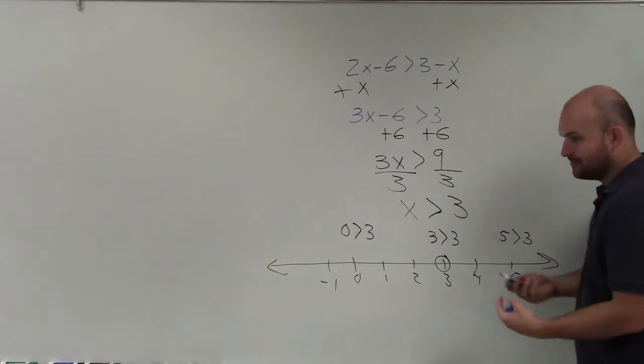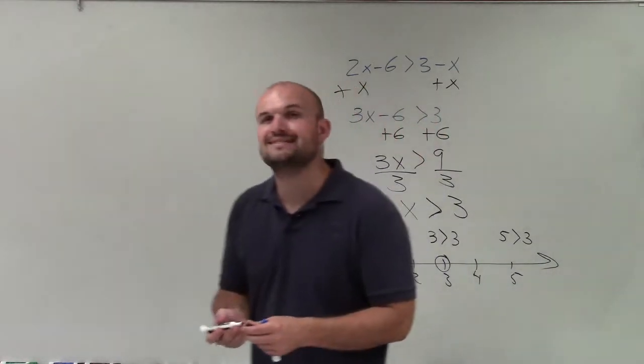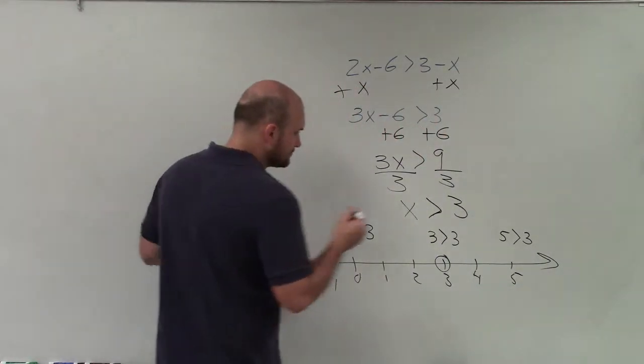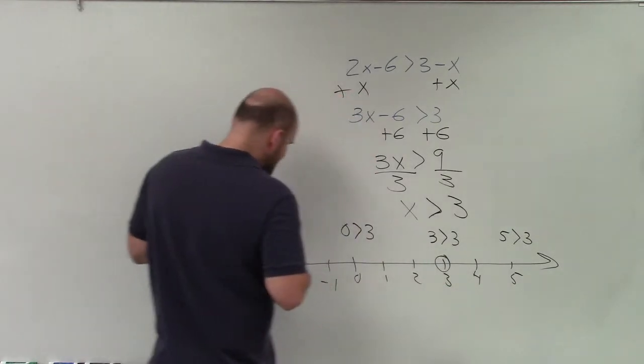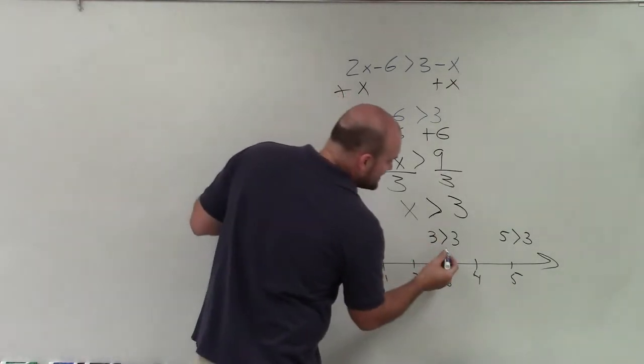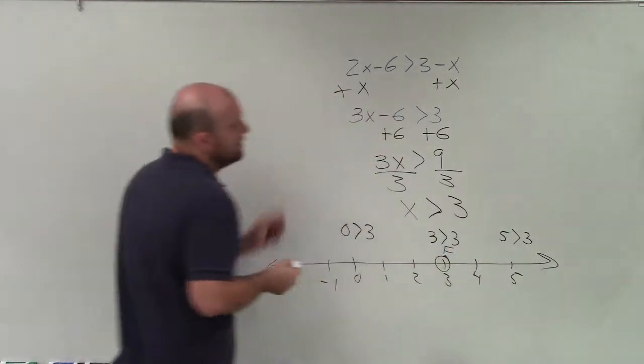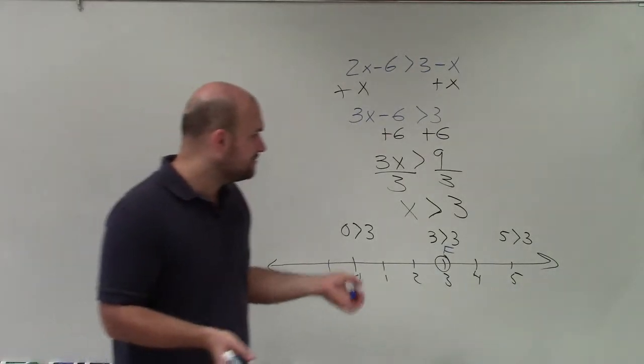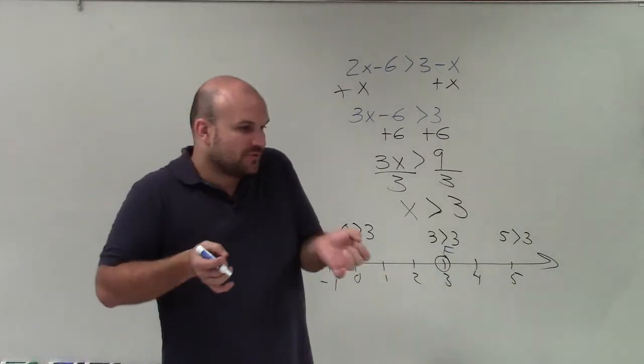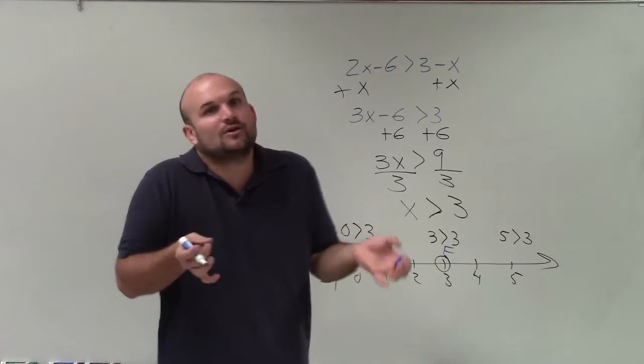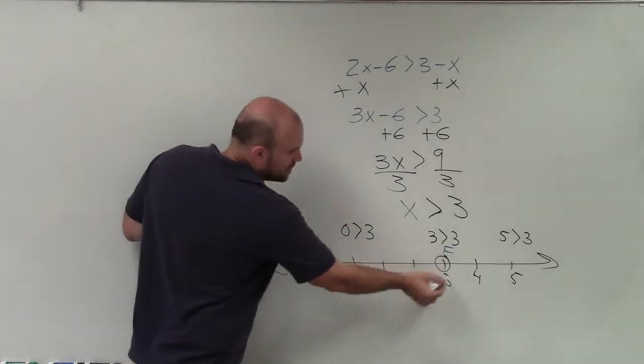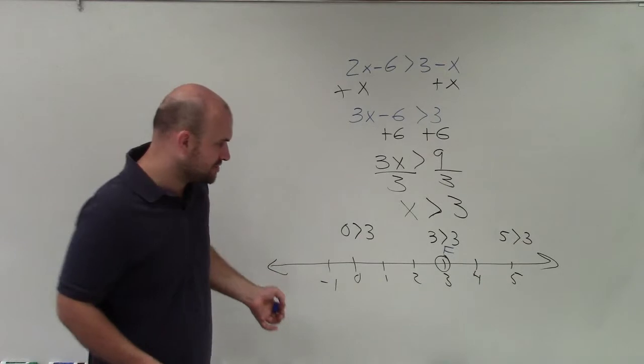So is 3 greater than 3? Well, no, 3 is not greater than 3. 3 is equal to 3. So that is false. And since it's false, 3 is not going to be a part of the solution. Now, it's still where we're going to start, because you could have like 3.1 or 3.0001, right? So it's still going to be a circle here. It's just the value of 3 is not going to be a part of our solution.